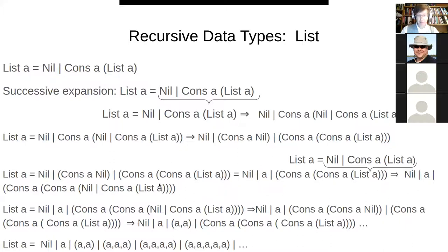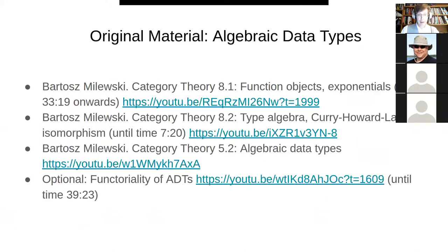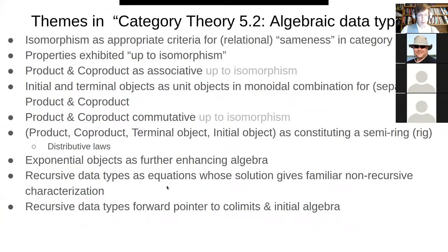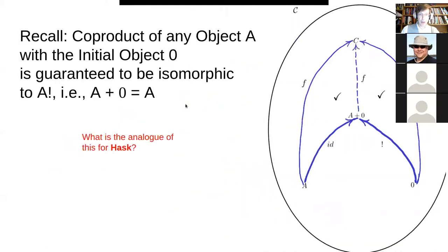This is a recursive data type. I could go on and talk about how all of this supports functoriality — automatically lifting things and deriving functors. But I think I'll leave that till next time, because I also want to prime the next session for a lot of discussion and questions.